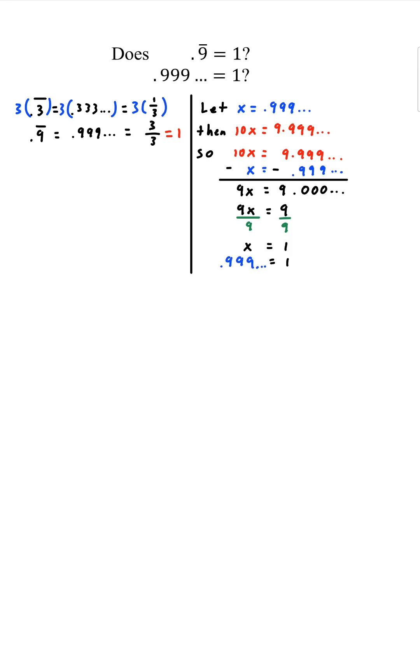And we get x equals 1. What was x originally? That was 0.999 repeated, which is 0.9 repeated. Second proof.